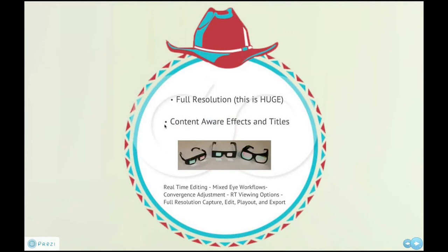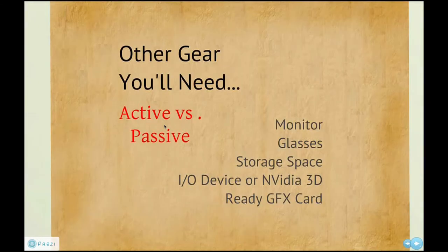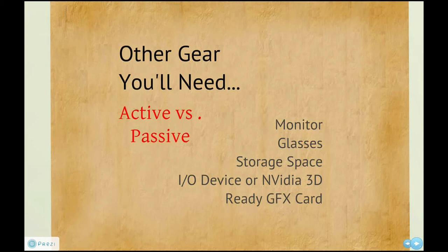Media Composer 6 has real-time 3D editing, mixed eye workflows, convergence adjustment, and play out — a full feature set for 3D. If you've been waiting to dip your toe in the 3D pool, now is the time. You'll need to decide between active versus passive monitors and glasses. Keep in mind storage space — when shooting stereo you traditionally have two eyes, so you'll have a lot of extra storage needs. A less expensive option is a sanctioned NVIDIA 3D graphics card, and Media Composer can use the DVI or DisplayPort output to push a 3D monitor — a pretty cool portable solution.